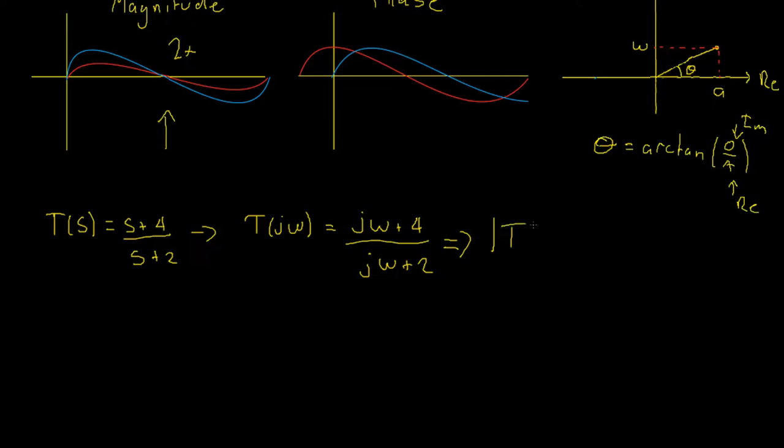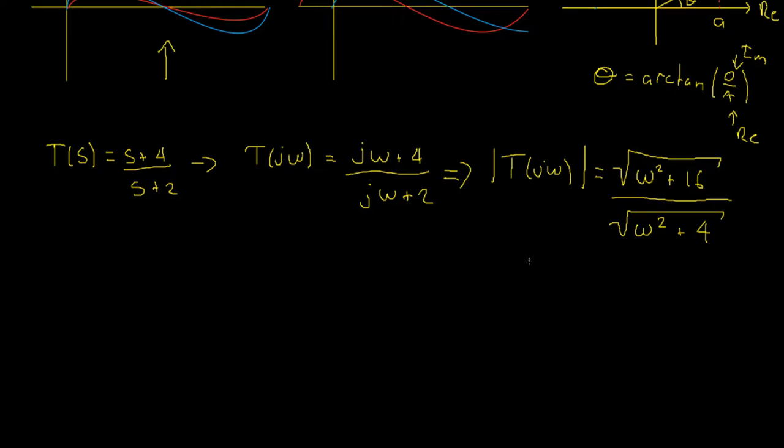In other words, the magnitude of T of J omega is equal to the square root of our imaginary component squared, which is simply omega squared, plus our real component squared, which is 16, divided by the square root of our imaginary component squared again, which is simply omega squared plus two squared, which is four.